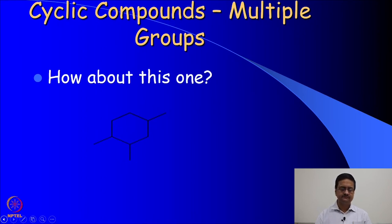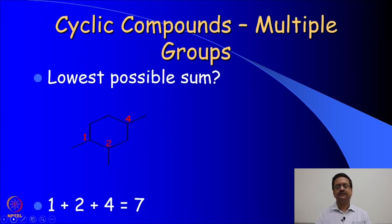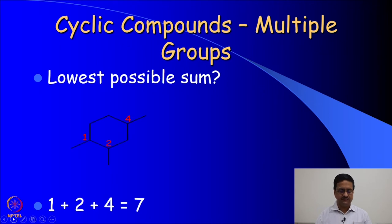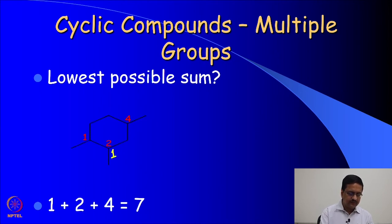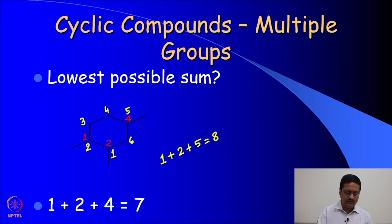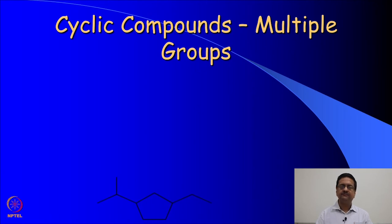When we have three different functional groups on a ring, we again write the numbers such that the sum of those three numbers is the lowest. Here, writing in the anticlockwise direction starting at 1 to 2 to 4 gives a sum of 7. If we had started differently, it would have been 1 plus 2 plus 5 equal to 8, which is larger than 7. So the correct lower-sum numbering must be used.